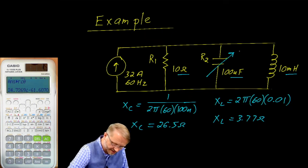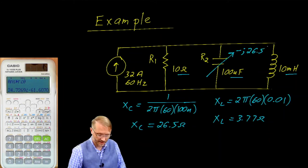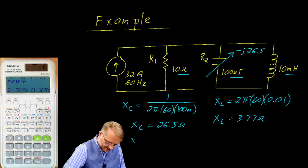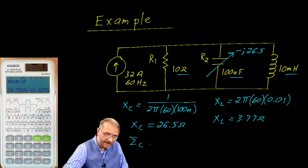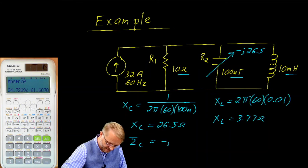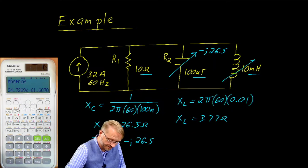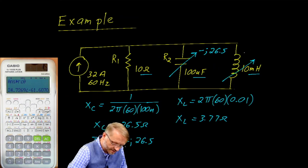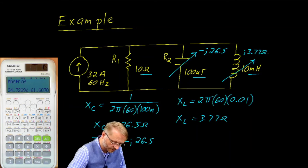We can move these numbers upstairs. And as we do it, we're going to say negative J 26.5 for the capacitor. So we've taken the reactance and we've said it's now a capacitive impedance. So that's a negative creature, negative J 26.5. And we've done the same thing with the inductor. Except inductors are positive. So J 3.77 ohms.